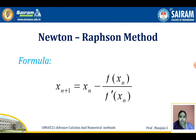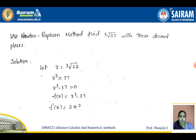Here we have to remember only the formula. The formula is: x(n+1) equals x(n) minus f(x(n)) divided by f'(x(n)). This is the iterative formula of the Newton-Raphson method. Based on this, we will work through some examples.